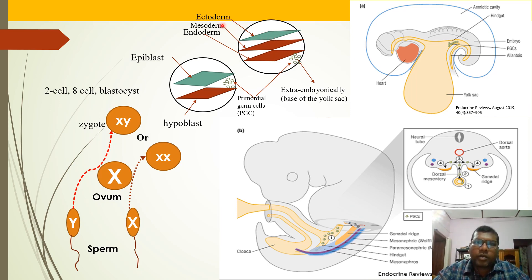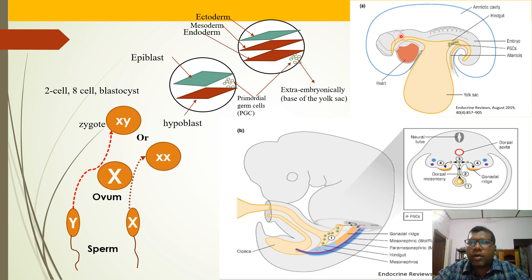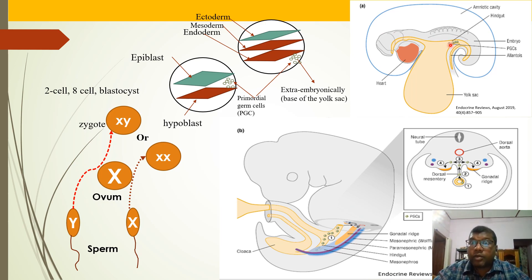The three germ layers — ectoderm, mesoderm, and endoderm — will form the whole fetus. Cells from these layers will differentiate to form different organs and systems. The primordial germ cells, however, will remain undifferentiated. It is very necessary that they remain undifferentiated. As the fetus grows there will be folding of this structure.